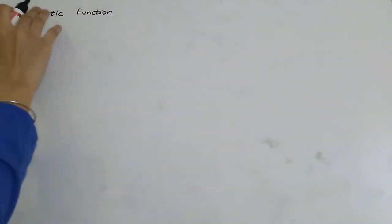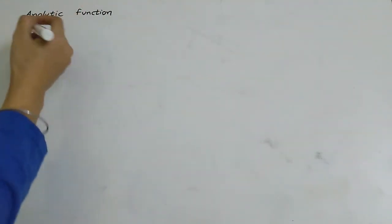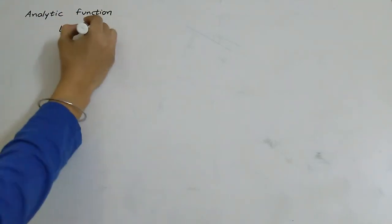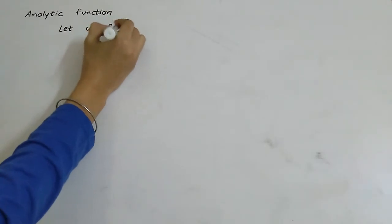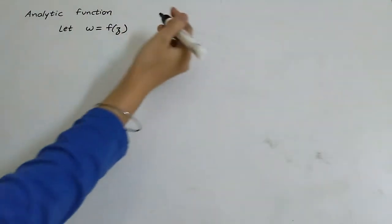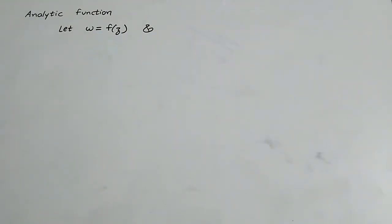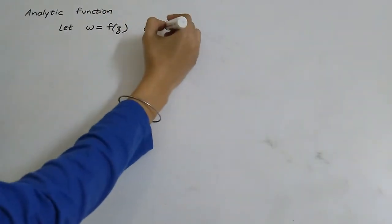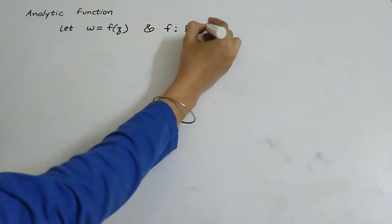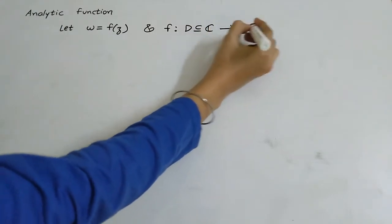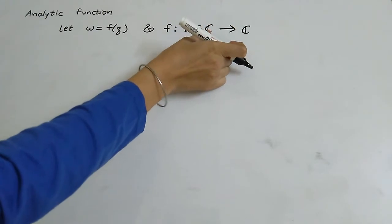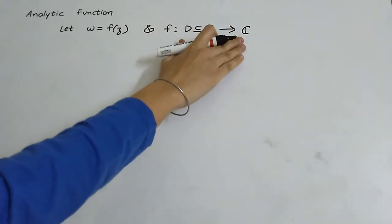So now we need a complex function for analytic function. Let w = f(z) be a complex valued function, where f is a mapping from D, which is a subset of C, to C. Here f's domain is a subset of C and codomain is C.